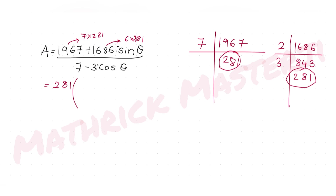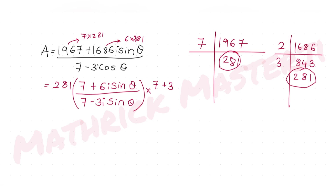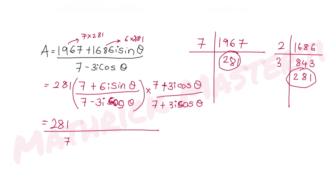Now I rationalize this expression by multiplying both numerator and denominator by the conjugate of the denominator, which is (7 + 3i cosθ). So I multiply and divide by (7 + 3i cosθ). The denominator becomes a² − b² form: (7)² − (3i cosθ)² = 49 − 9i² cos²θ.